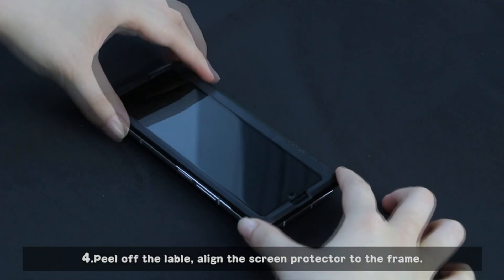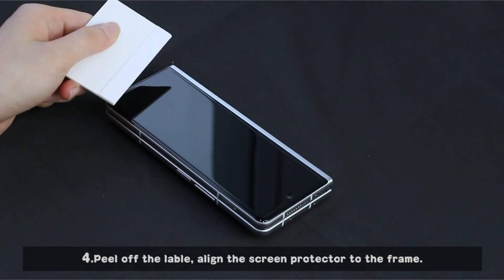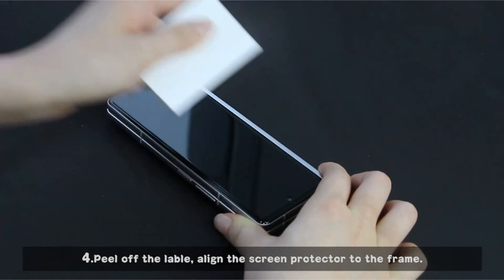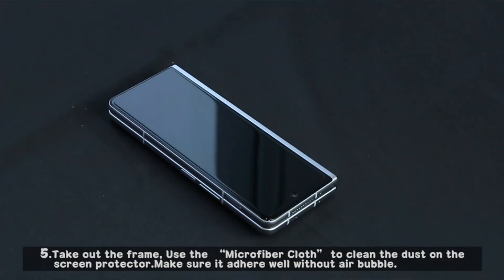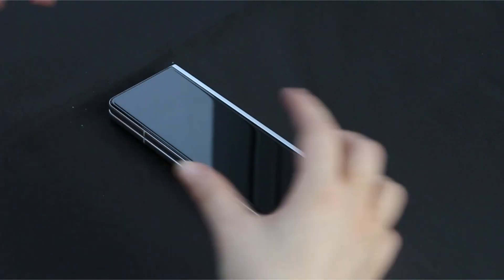The Samsung Galaxy Z Fold 4 is now available, and a new owner may be considering how to safeguard its crucial dual screen as soon as they get their hands on one. The 7.6-inch 120Hz dynamic AMOLED display on the upgraded foldable phone is ideal for watching movies or managing professional emails.